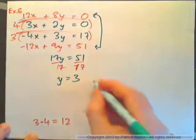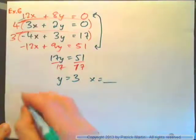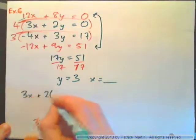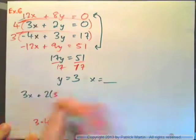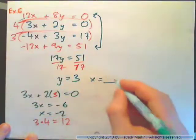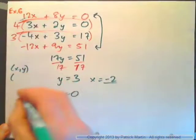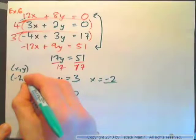And then we can find x. We need the value of x also, right? So 3x plus 2 times 3 equals 0. Put it into the top equation. And 3x equals negative 6, and x is negative 2. So you should have y is 3, x is negative 2. So as an ordered pair, x, y, the answer should be negative 2, 3.